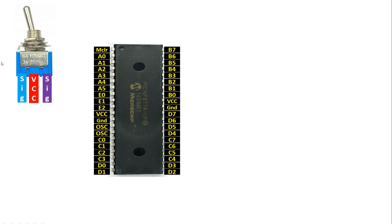I am going to connect this button in a way that whenever a toggle is switched, it will send a one, and once it's in center, it will send a zero. The right side toggle is totally independent from the left side — you can do a different task on each side. It's like two push buttons in a single steel body switch. Center is the common, the left is a different signal, and right is a different signal.